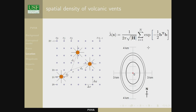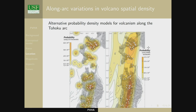Here is a probability density function: where will new stratovolcanoes form in the Tohoku arc? There are two alternative probability models — two alternative estimations of what the bandwidth matrix H should look like. One on the right looks like a pretty classical subduction zone model with little variation along arc. If I use a different statistical model, I wind up with the panel on the left, which emphasizes long-arc variation in rates and productivity of magmatic systems. I can tell you whatever answer you want based on how I estimate these parameters.